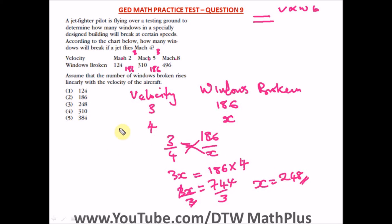So we're going to have 248 windows broken at Mach 4. So this is our answer and our right option here is option 3.